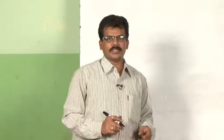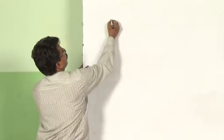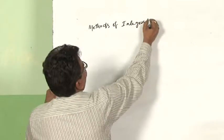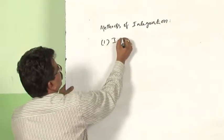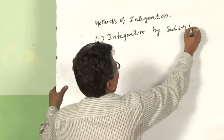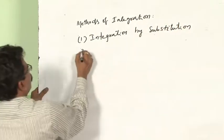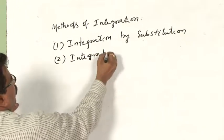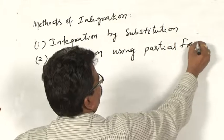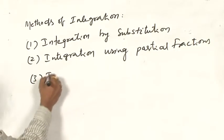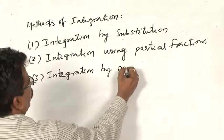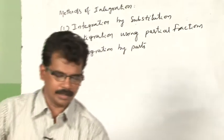Now let us see how many methods there are for finding the integration. Methods of integration: Number 1 - integration by substitution. Number 2 - integration using partial fractions. And mainly, the third one is integration by parts. These are the important methods of finding integrations of some functions.